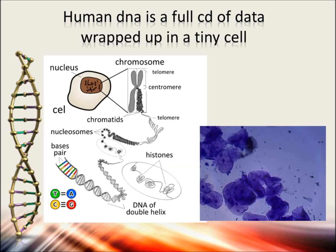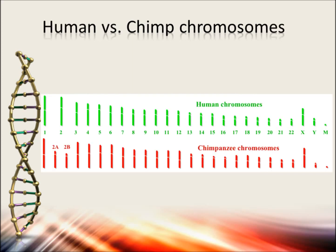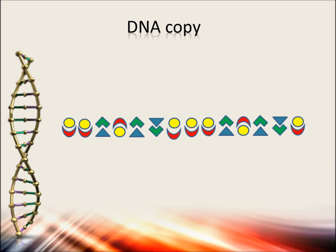So small that you can't even see it. The strings are wrapped up in small spirals, and those spirals form chromosomes. A human being has 23 chromosome pairs. A chimpanzee has 24 chromosome pairs.